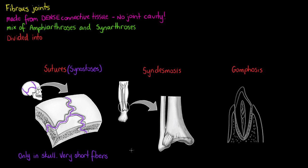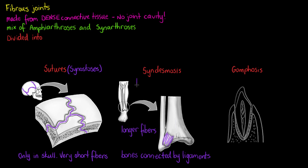Moving on to our syndesmosis, these joints are connected exclusively by ligaments, with the term 'syndesmos' meaning ligament. The fibers in this type of fibrous joint are always longer than in sutures, but the actual length can still vary quite significantly. As we can see with the distal tibia and fibula connecting, the fibers are relatively long but still only limited movement is allowed. Functionally we would usually call this a synarthrosis, but because of the slight movement some authorities define it as an amphiarthrotic joint.